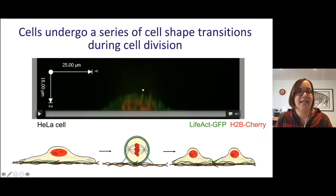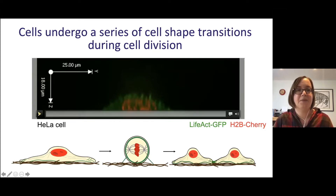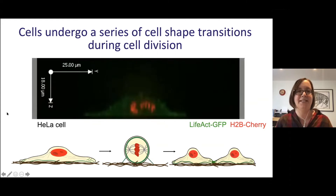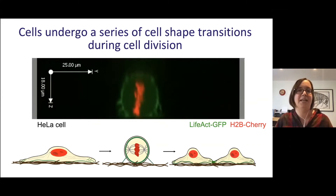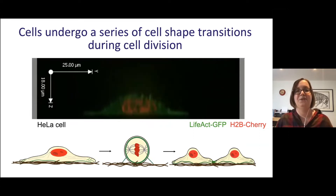This is illustrated in a video of a HeLa cell dividing in tissue culture on a glass dish. The actin cytoskeleton labels the edge of the cell in green and DNA is labelled in red. As the cell enters mitosis and prepares to divide, it completely changes shape and becomes spherical and round. Then the metaphase plate is formed, chromosomes align in the middle, they are separated, and the two daughter cells spread back down onto the substrate.